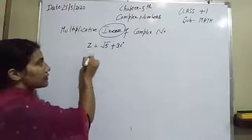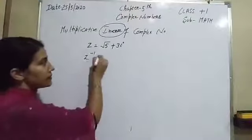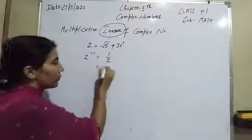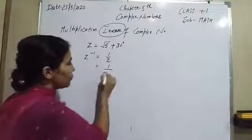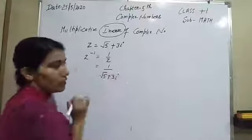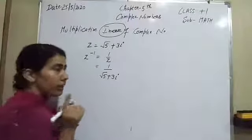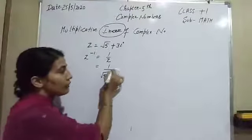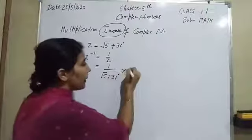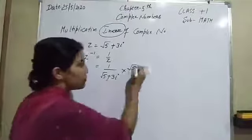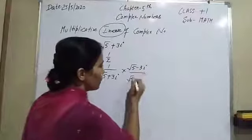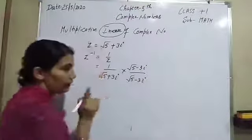We have to find z inverse, that means 1 over z. Put the value: z is root 5 plus 3 eta. Now again we have to do rationalizing. Here is a positive symbol, so make it negative — rationalize by root 5 minus 3 eta.